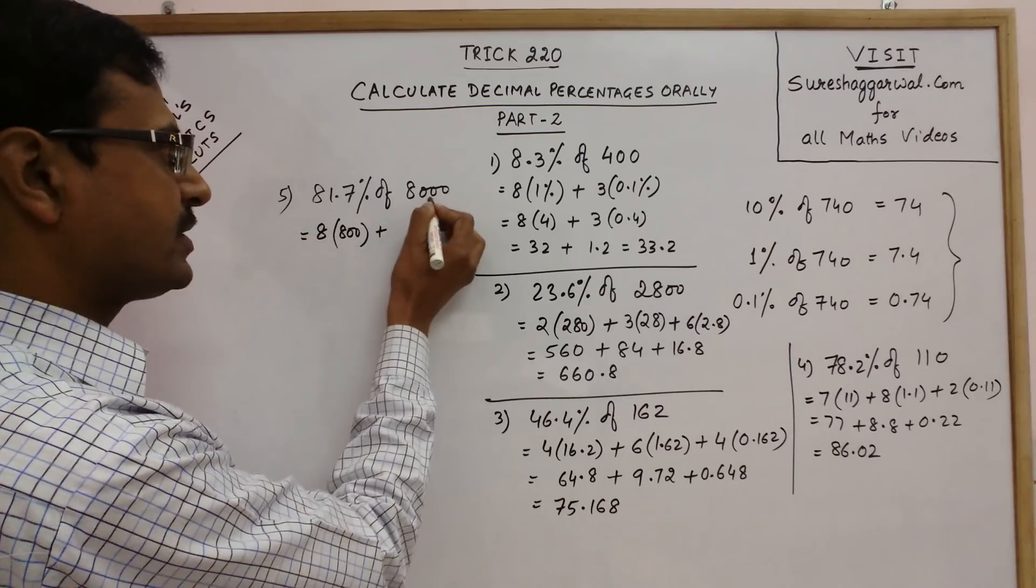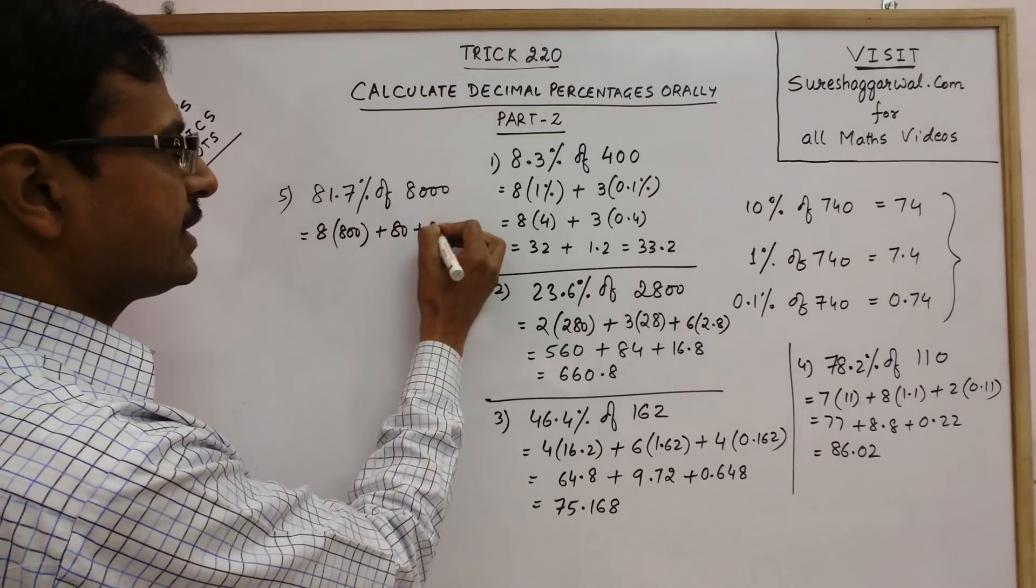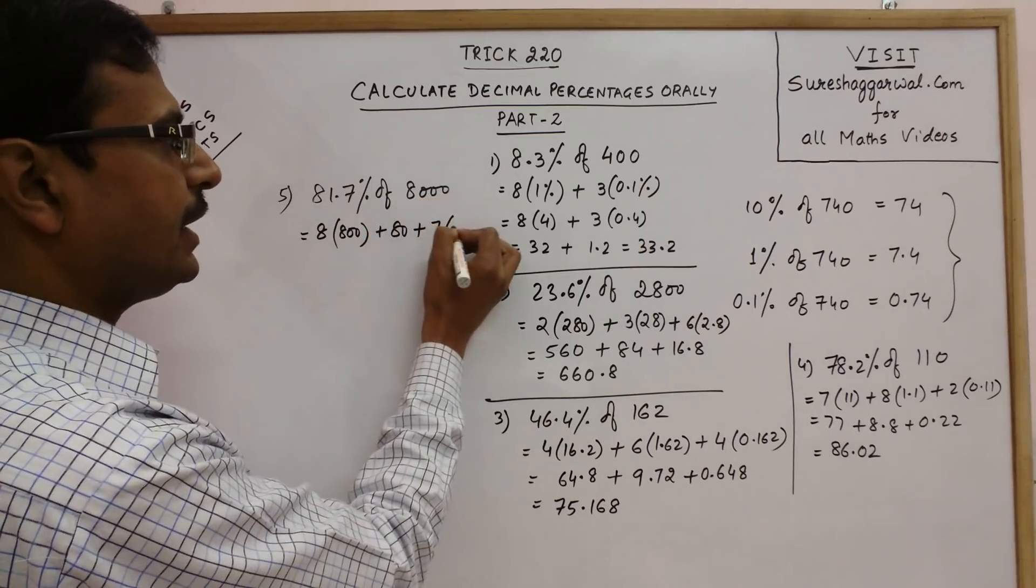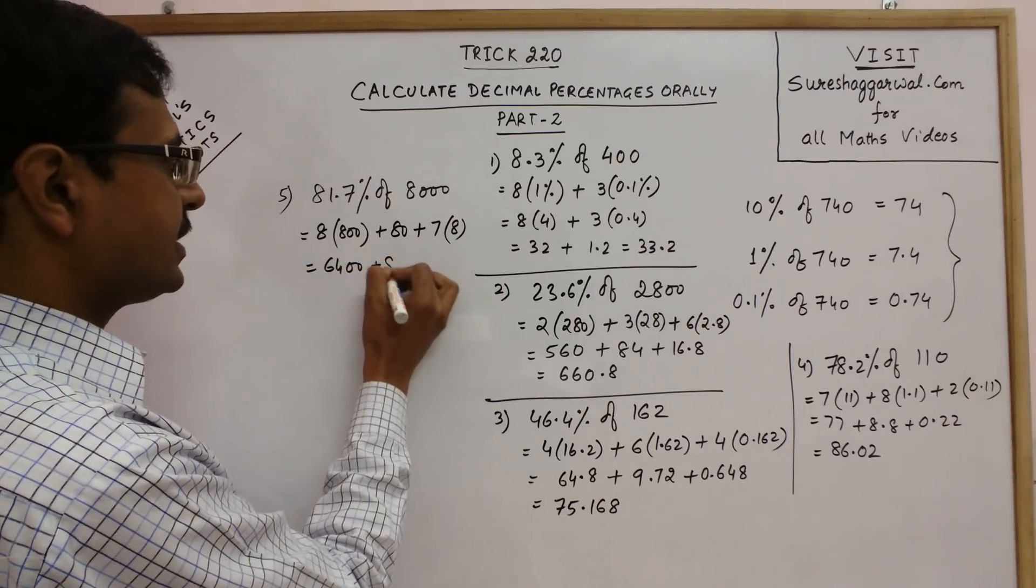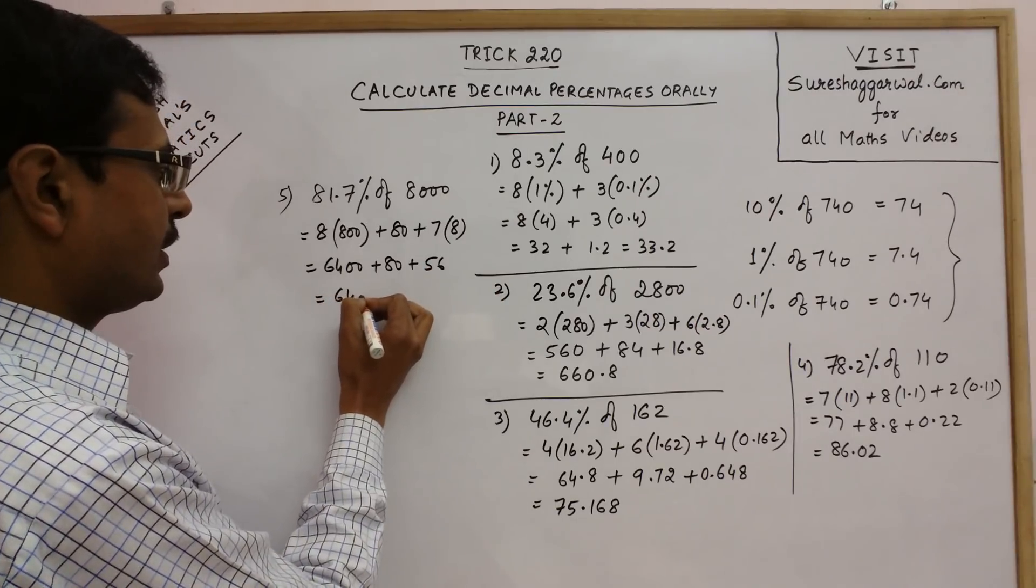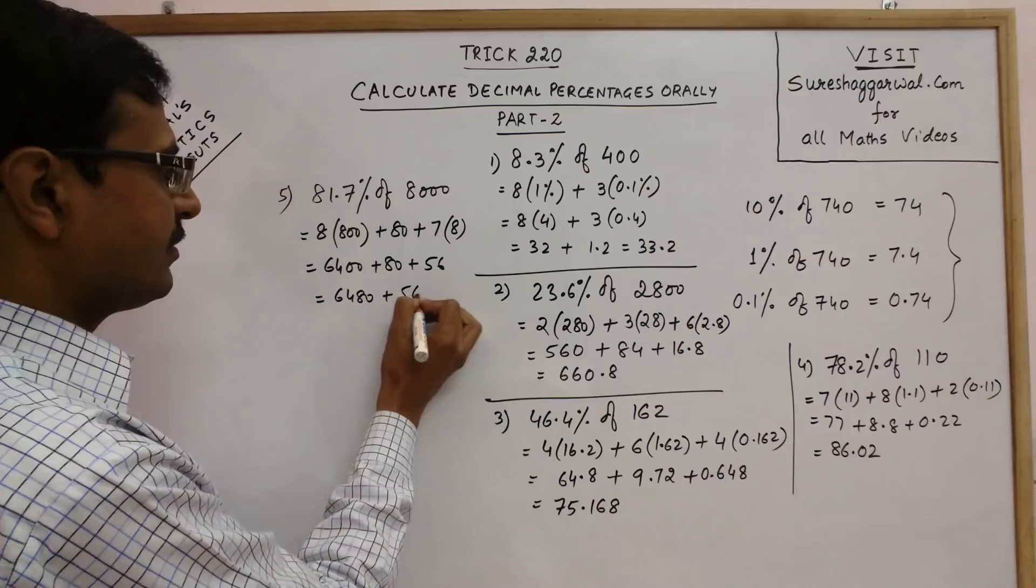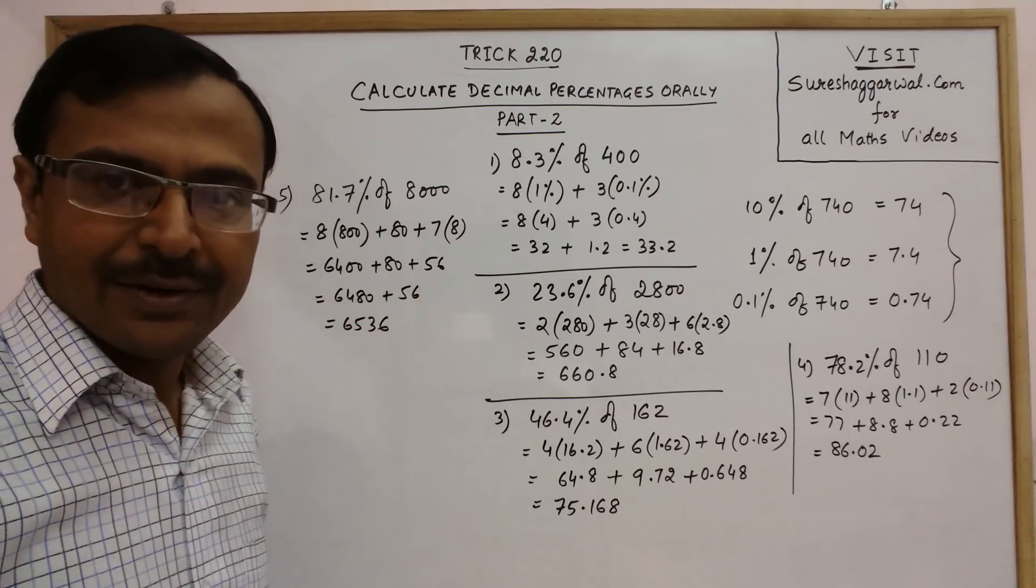1% obviously is 80. And 0.7% that is 7 into 0.1% is 8. So this is 6400 plus 80 plus 56. So 6480 plus 56 which is 6536 is the required answer.